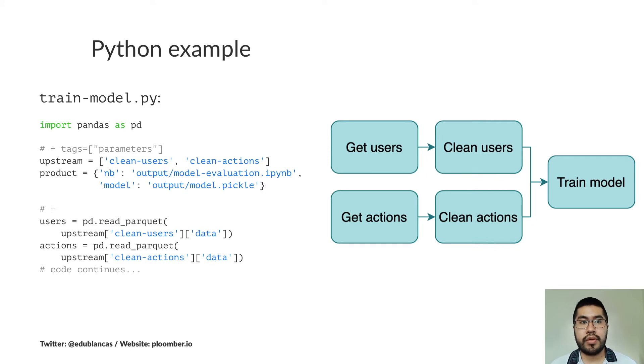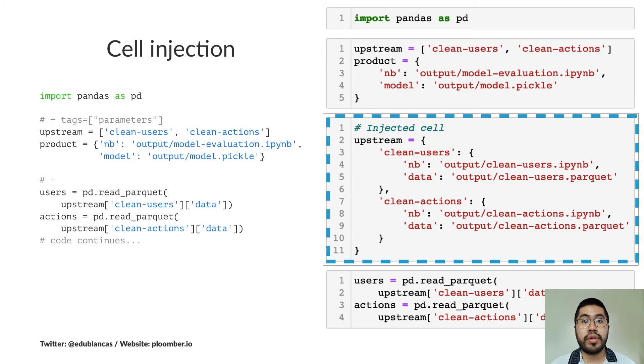There's something interesting about this script because the upstream variable that you write only contains the name of the tasks that you want to use as dependencies because you are going to use those outputs as inputs. But you don't know where those files are. You are just saying that you want to use those dependencies. That's why Plumber does a cell injection process because it's going to take your dependencies, look for the output files of those tasks and put them in your code so that you can load the appropriate files from the right location. And you can see on the left side, that's the code that you write. You just list your dependencies. But in the right side, that's the code that actually gets executed. That one contains the location for the files that you need.